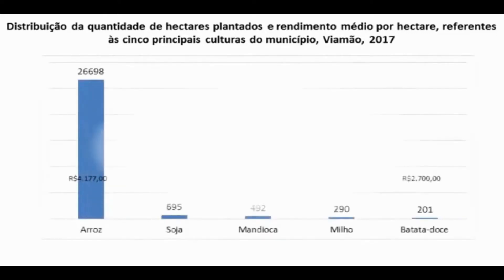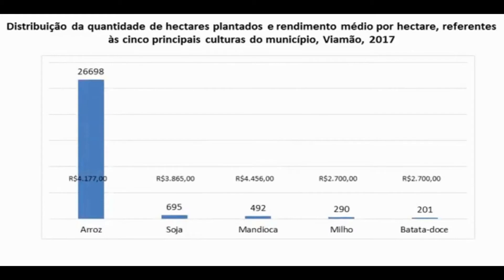Ainda com relação ao rural, vemos a quantidade de hectares plantados e o rendimento médio por hectare das cinco principais culturas do município. Disparado, a maior cultura é a de arroz, chegando a 95% dos hectares rurais designados para lavoura, com rendimento médio de R$ 4.177,00 por hectare. O rendimento mais expressivo por hectare é o da mandioca, com R$ 4.456,00. Soja, milho e batata-doce aparecem como as demais culturas principais.